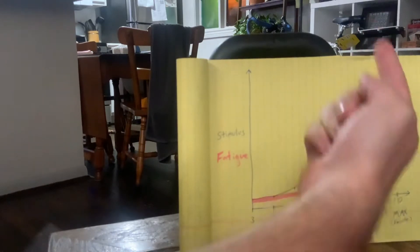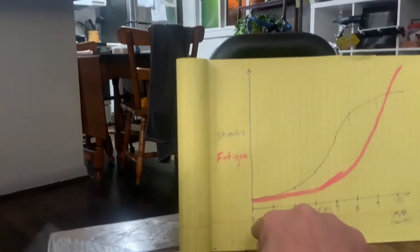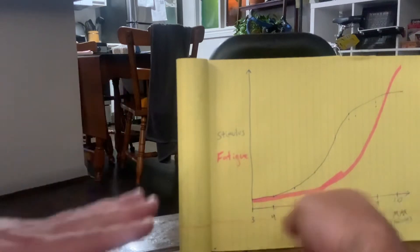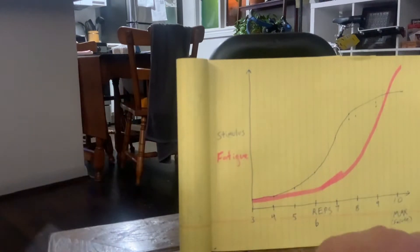So the higher up we go, the better. Now on the x-axis, this is going to be a theoretical scale. None of this is meant to be exact, it's a little bit theoretical but it's well vetted in the science. So 10, this is going to be we're doing a set that 10 would be our max.